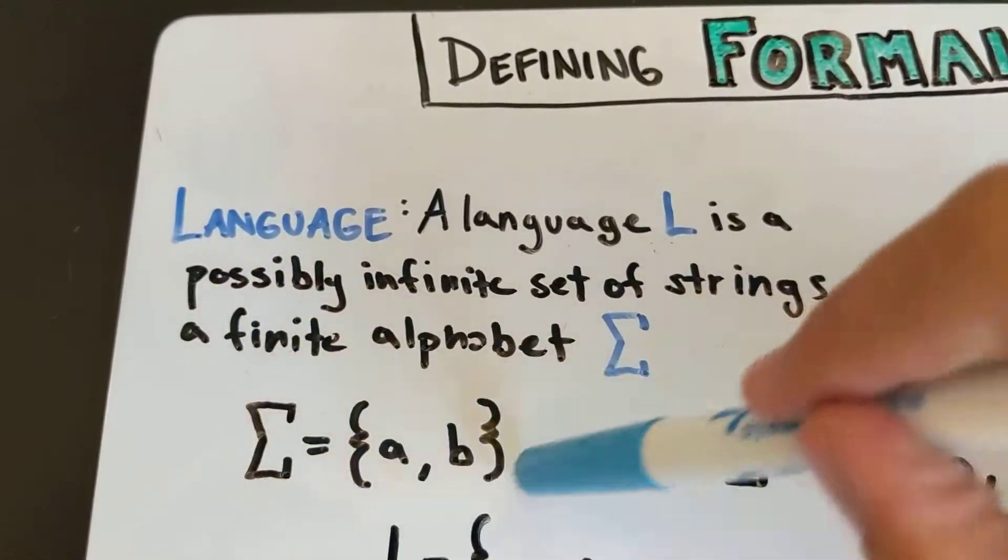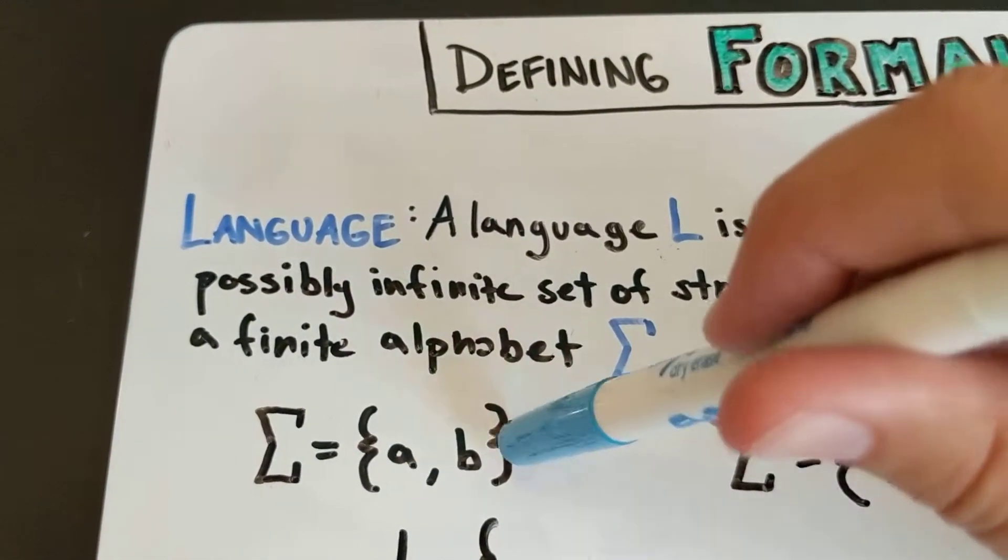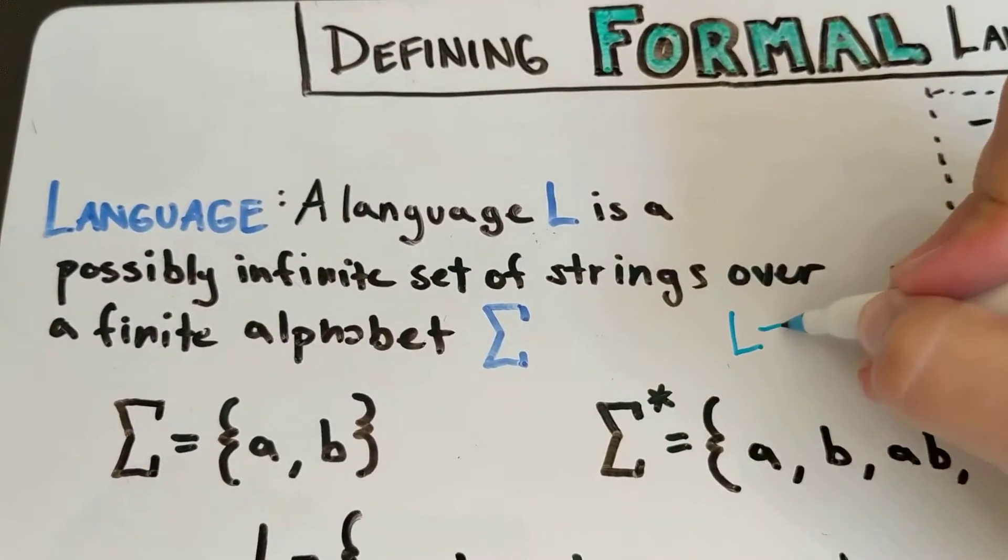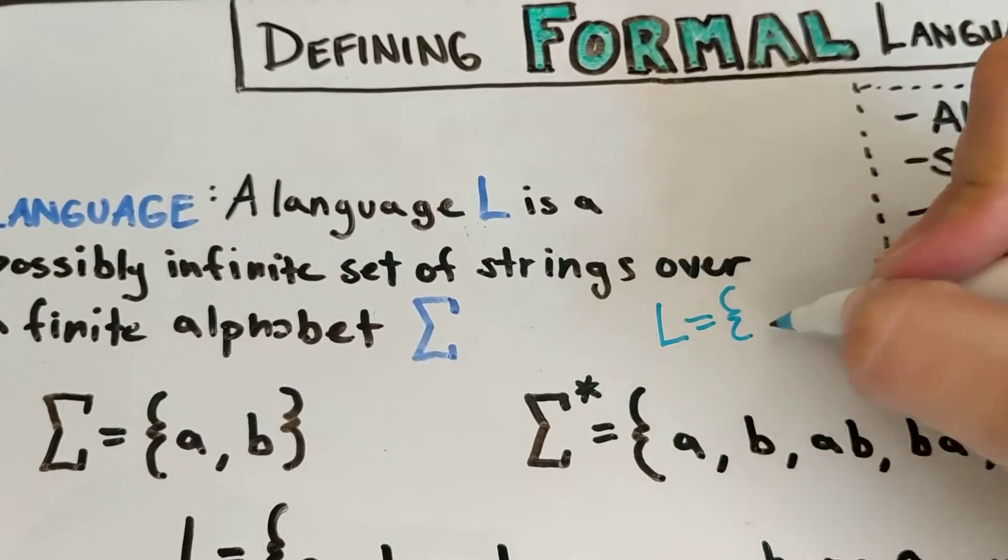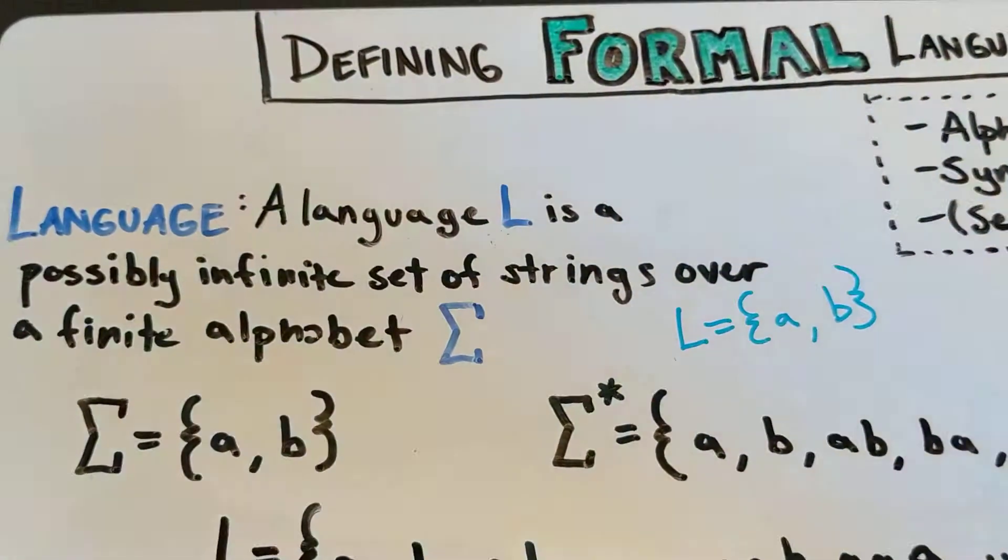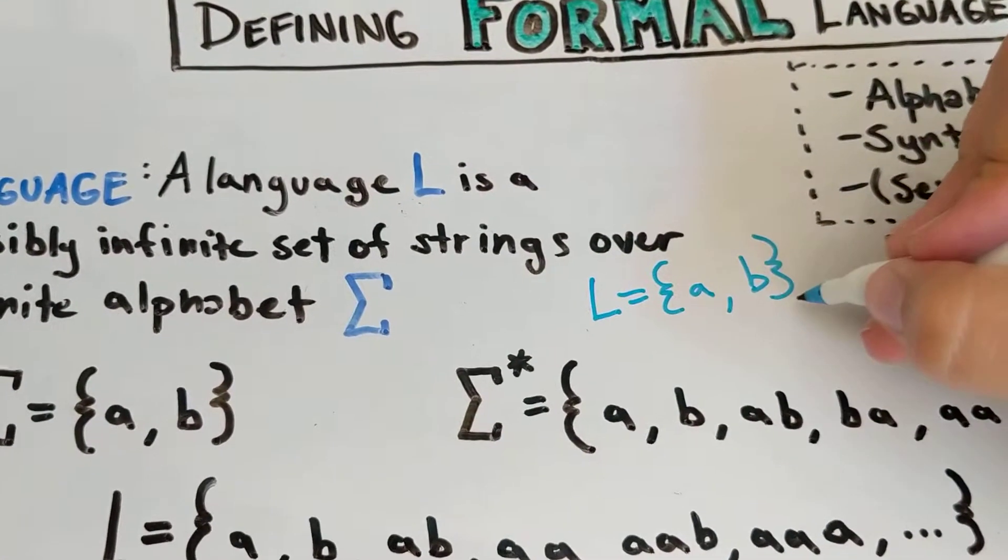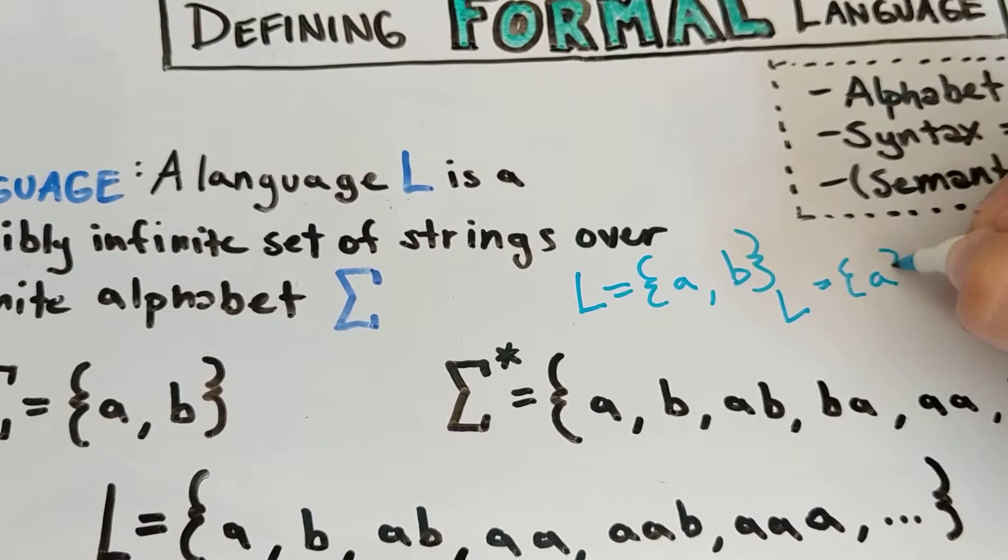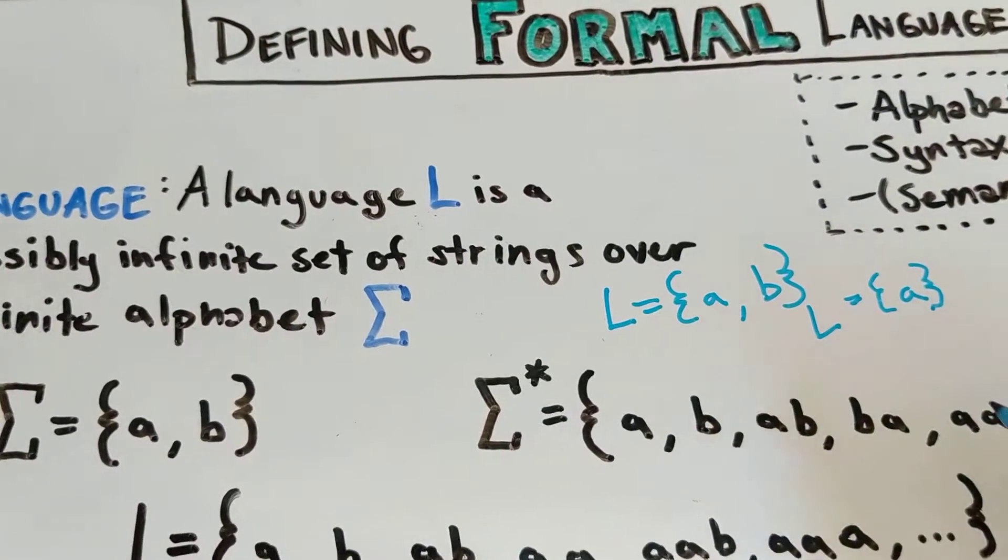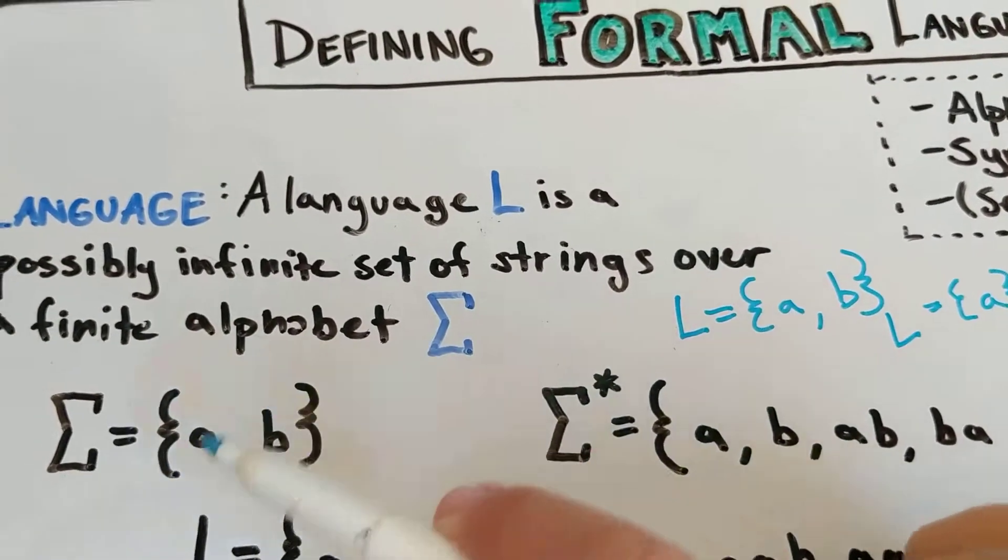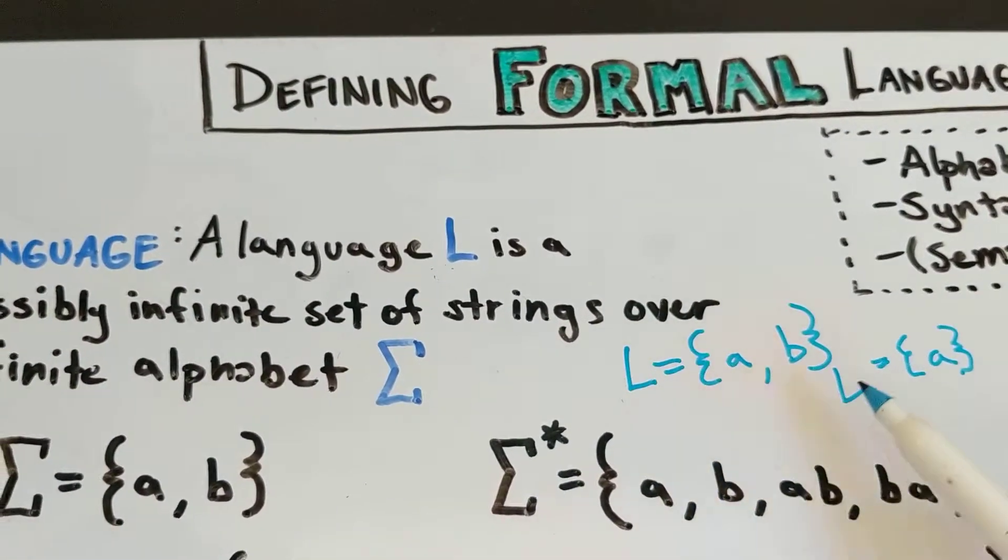And your language could be any sequence of A's and B's restricted in any sort of way you want. But a language L is a possibly infinite set of strings over a finite alphabet. So if you have this finite alphabet, you could have a language that is just A, B. You could have a language L that is just the set containing A and the set containing B. That could be your language L, or even smaller, and that could still be a language over this alphabet.